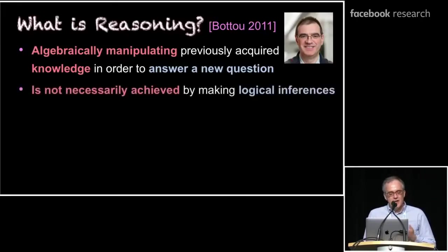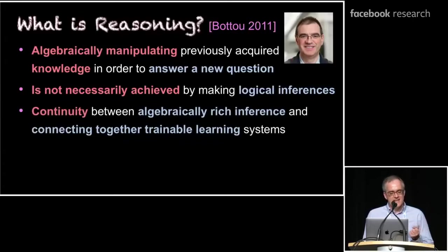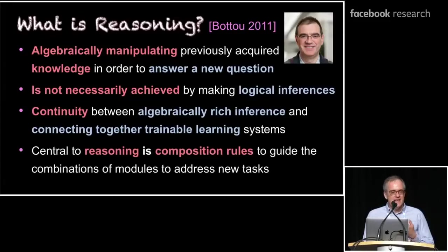He points out that often when people say reasoning, their mind immediately jumps to logical inferences. But it doesn't necessarily have to be achieved by logical inferences. In particular, he suggested that there's a kind of continuity between the algebraically rich systems that you have in neural networks over to the kind of algebras that are used in places like logic. And so that if we could start down the road of connecting together trainable learning systems in the neural network world, that might lead us on the path to inference. But in particular, what he wanted to emphasize is that central to reasoning is having a system with composition rules so that we can guide the combinations of modules.